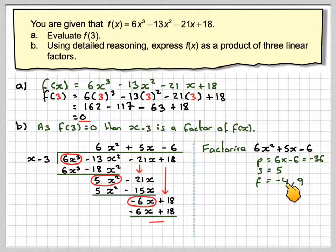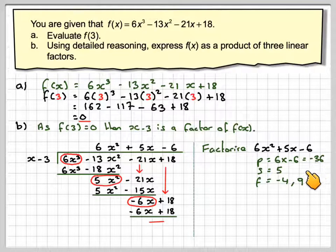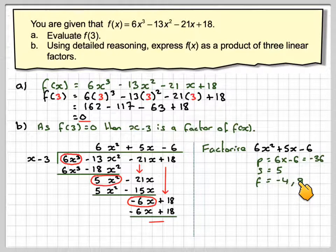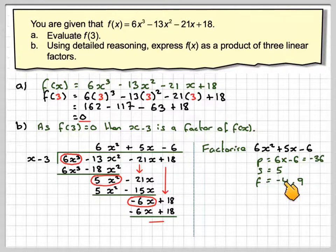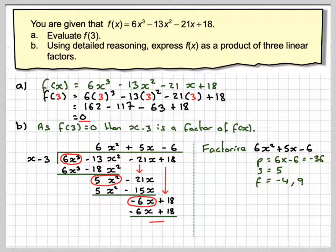So minus 4 and 9. Minus 4 times 9 makes minus 36. Minus 4 plus 9 makes 5. So it's OK. These two you can write down anyway, but it is better to write the smaller one first. Now we write down our expression: 6x squared minus 4x plus 9x minus 6.